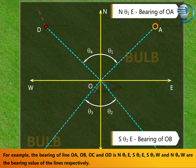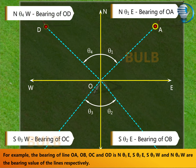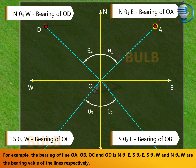The bearing of lines OA, OB, OC, and OD are North Theta-1 East, South Theta-2 East, South Theta-3 West, and North Theta-4 West respectively.